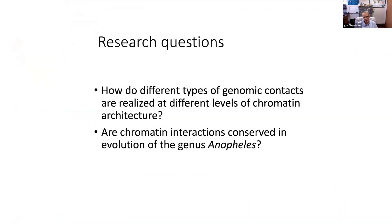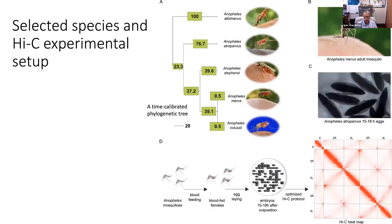The research questions we asked were: how do different types of genomic contacts manifest at different levels of chromatin architecture? And are chromatin interactions conserved in the evolution of genus Anopheles? We developed our project to include the whole phylogeny of mosquito species with a maximum divergence of 100 million years and a minimal divergence of 0.5 million years, so we can look at evolution of the three-dimensional organization. We used embryos for Hi-C and obtained typical Hi-C maps to study different layers of that hierarchy.